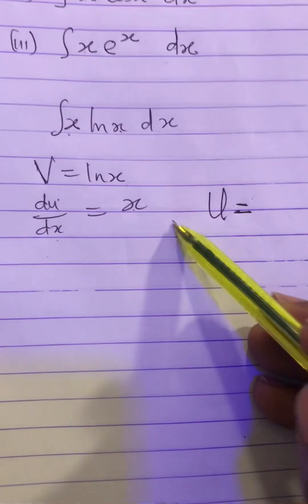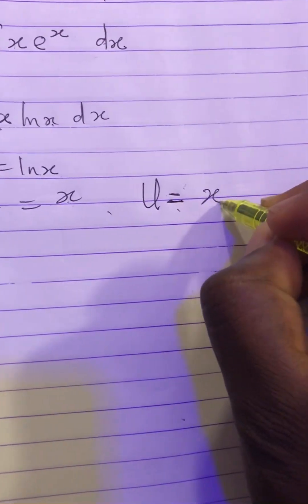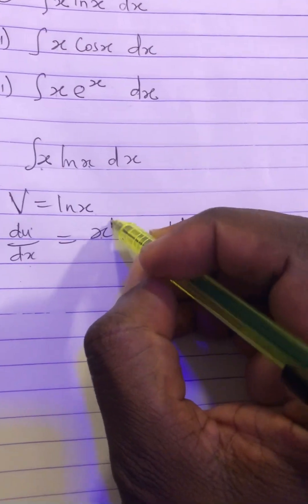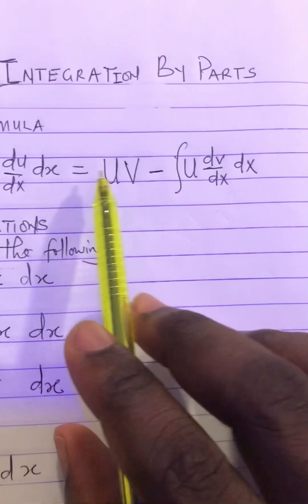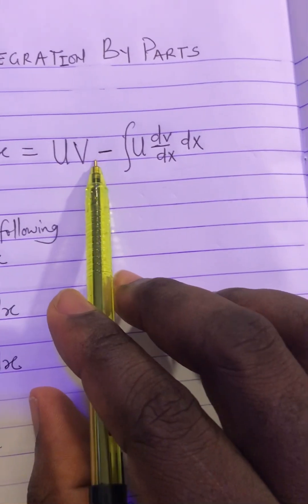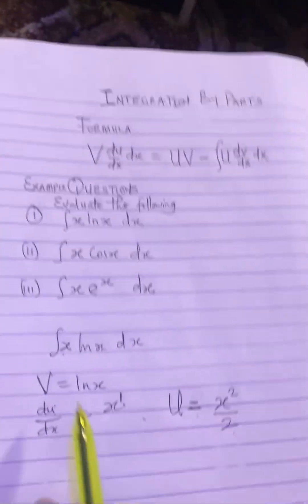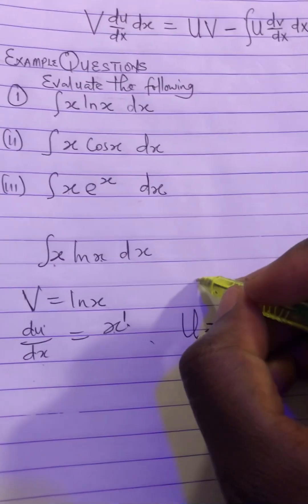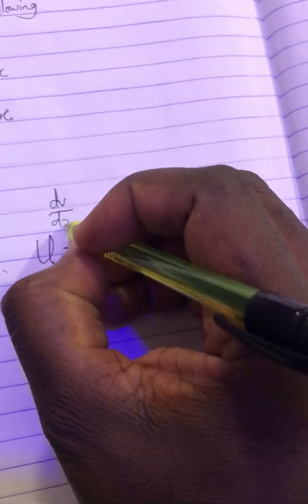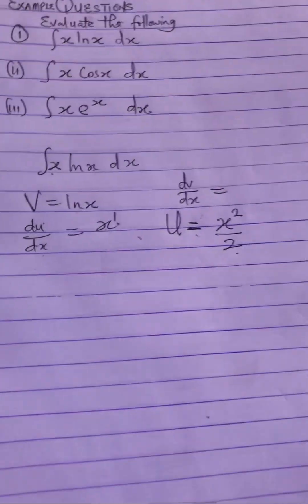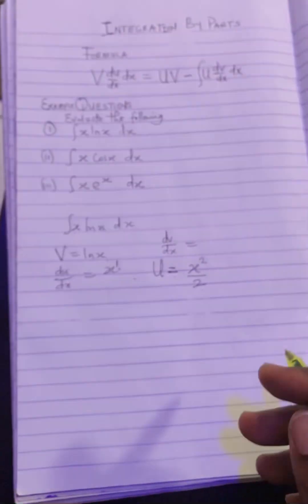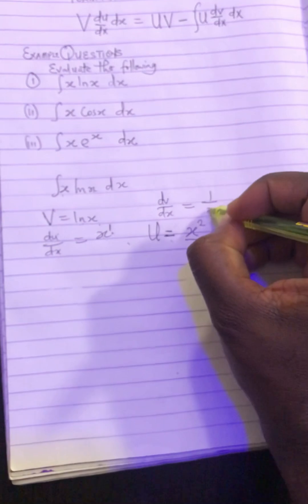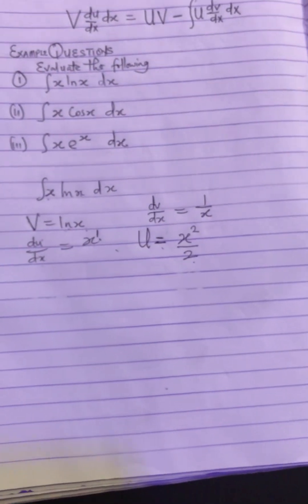Coming back to our question: if du/dx = x and we want u, we integrate x. So u = x²/2, since x = x¹, add 1 to get x², divide by the new power 2, giving x²/2. Now we also need dv/dx — that means we differentiate v. Since v = ln x, differentiating ln x gives dv/dx = 1/x.